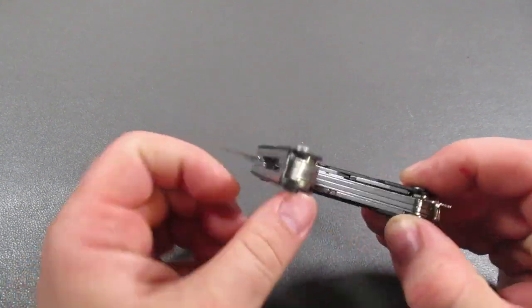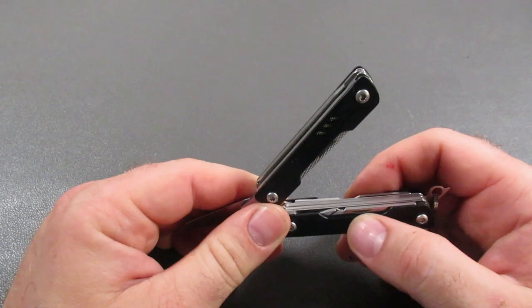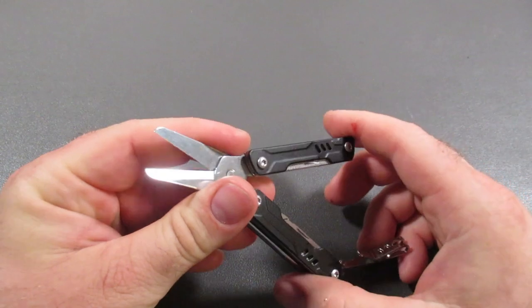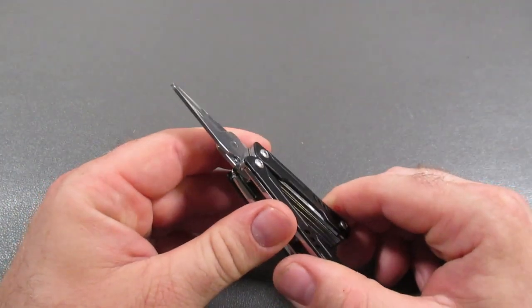And I would probably carry this over the Micra because it does have that set of pliers, albeit small they are, that I could use in emergency as a backup.